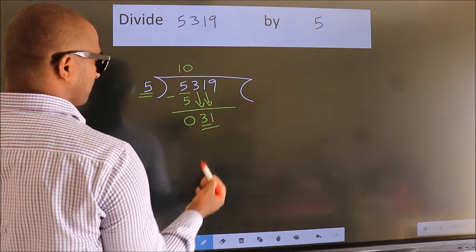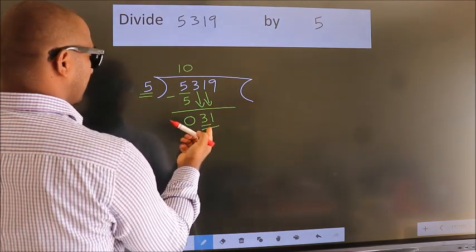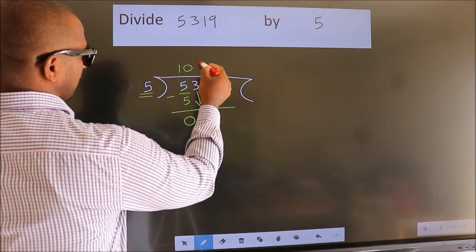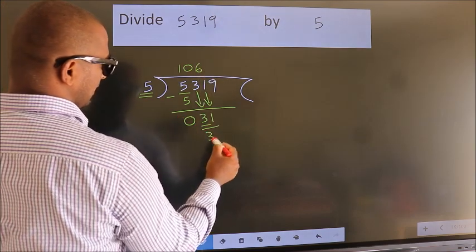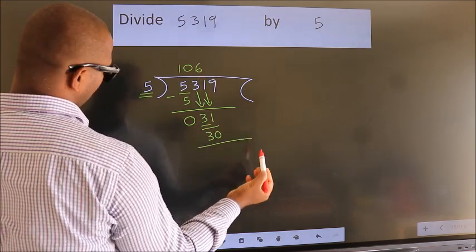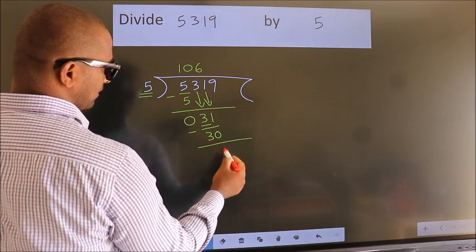So, 31. A number close to 31 in 5 table is 5, 6, 30. Now, we subtract. We get 1.